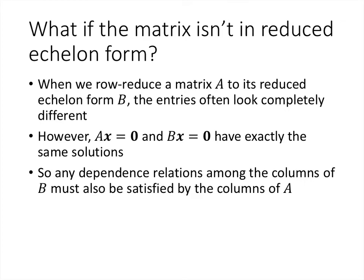That's because the matrix equations AX equals 0 and BX equals 0 have exactly the same solutions. A solution to AX equals 0 is a linear combination of the columns of A that equals 0 — in other words, a dependence relation among the columns. That same vector X being a solution of BX equals 0 means that same dependence relation holds among the columns of B. Row reduction doesn't change the solutions of the underlying system, so the dependence relations among the columns are the same for both matrices.